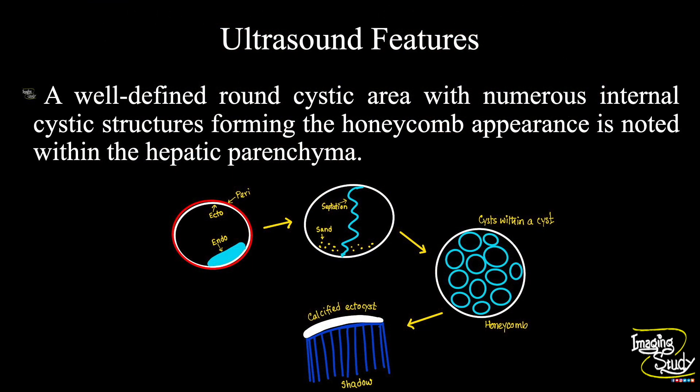In summary, a well-defined round cystic area with numerous internal cystic structures forming a honeycomb appearance is noted within the hepatic parenchyma, indicating the infective state of hydatid cyst.